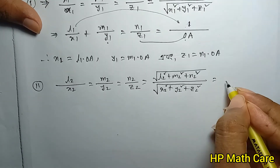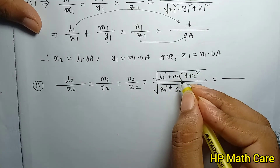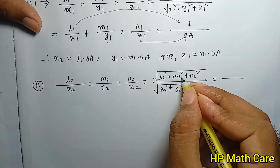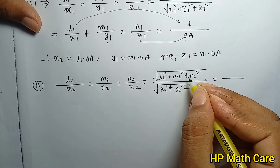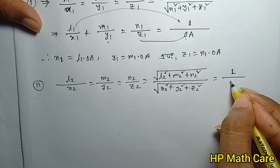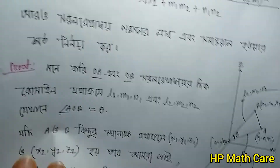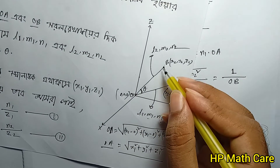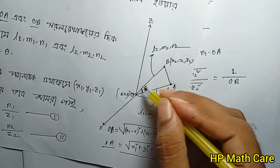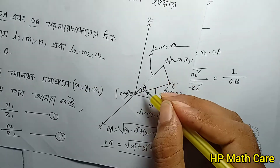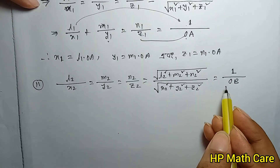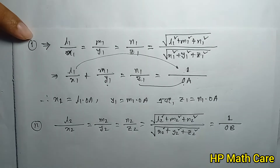So you can see that l1 squared plus m1 squared plus n1 squared equals 1 — that's our information. And l2 squared plus m2 squared plus n2 squared equals 1. So 1 equals 1. You can see 1 equals 1 above the root. So: x2 minus 0, y2 minus 0, z2 minus 0 — what is OB? Root of x2 squared plus y2 squared plus z2 squared. We will see this.